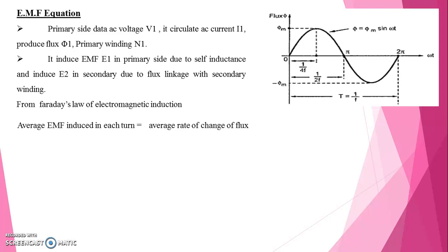From Faraday's law of electromagnetic induction, average EMF induced in each turn is equal to average rate of change of flux. Average EMF per turn is equal to d phi by dt. Here d phi by dt is equal to change in flux divided by time required for change in flux.